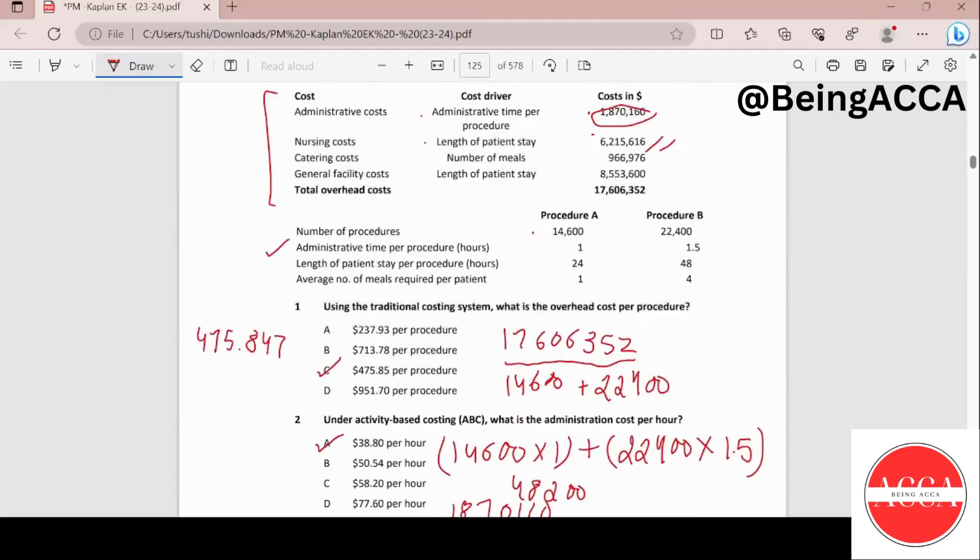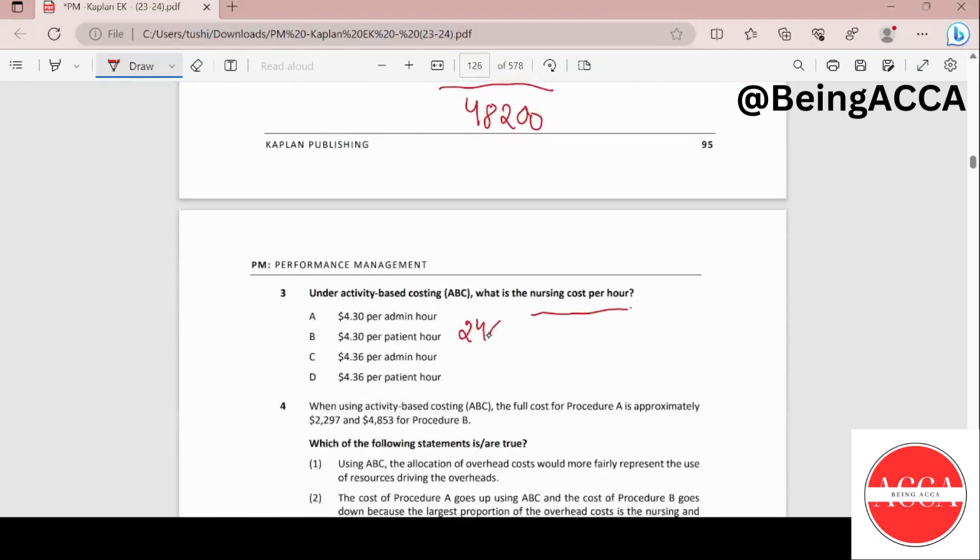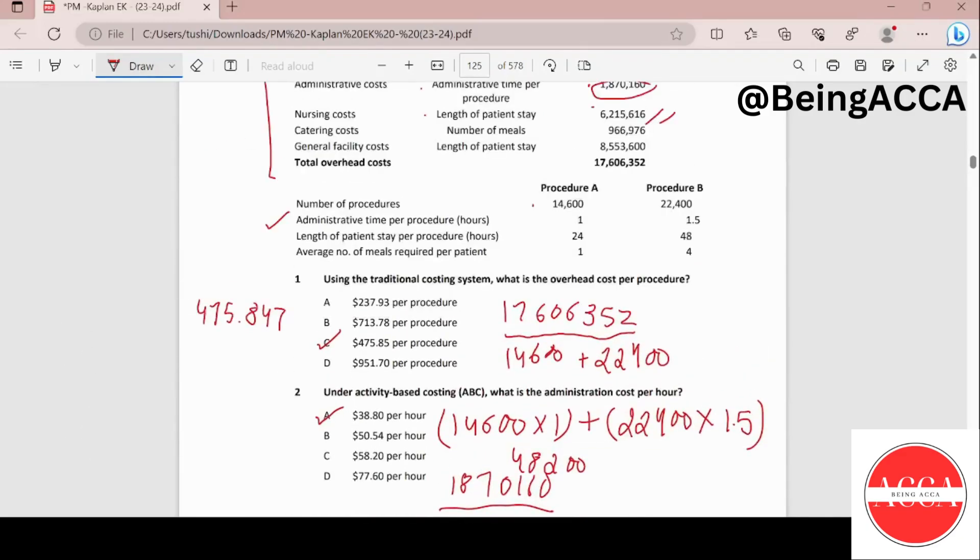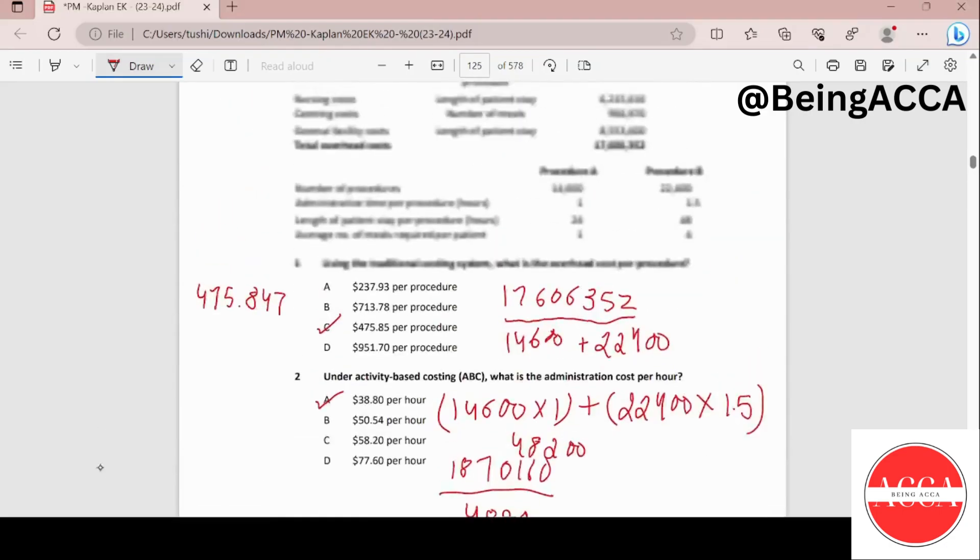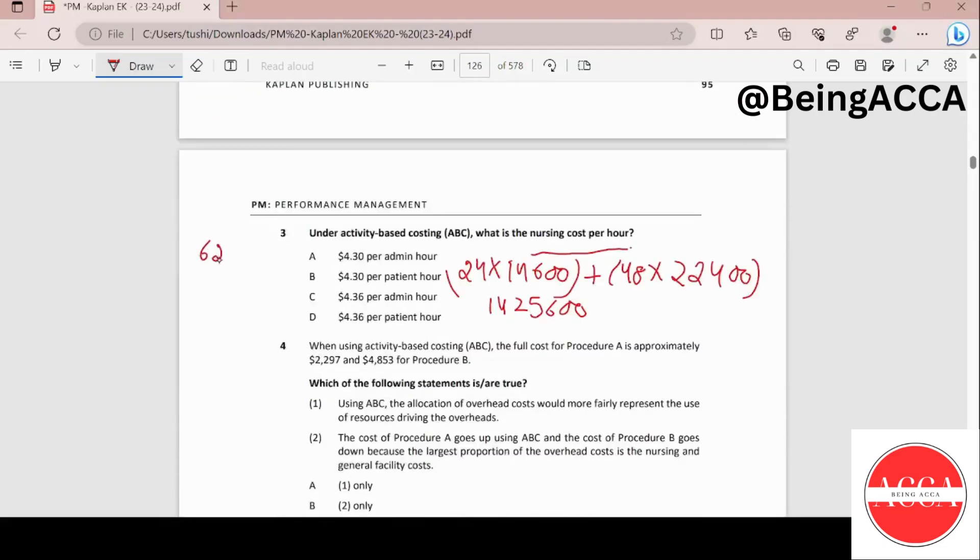We're going to find out the total number of hours which is 24 into 14600 plus 48 into procedure B numbers, 22400. So this is 1425600. I'm just going to divide this figure 6215616, divide this by 1425600, and I get my answer as 4.36 per patient hour.